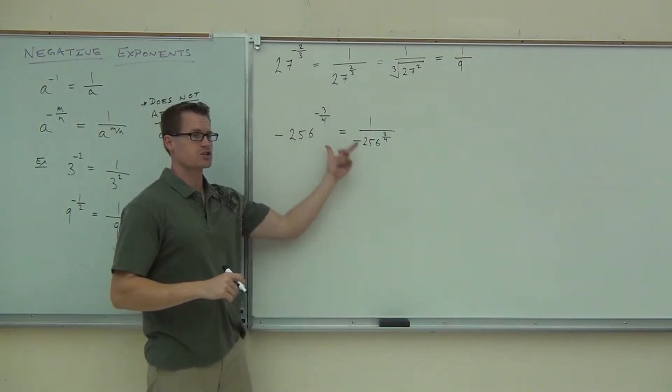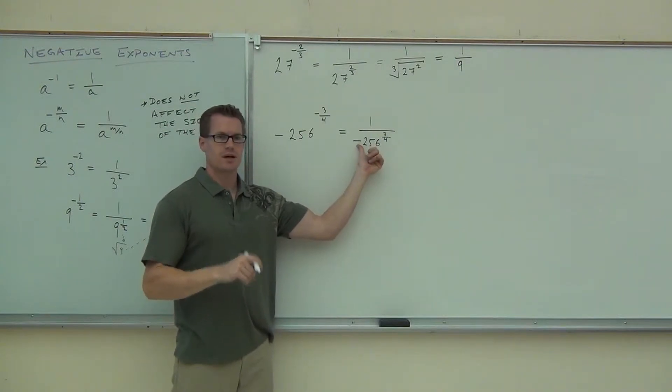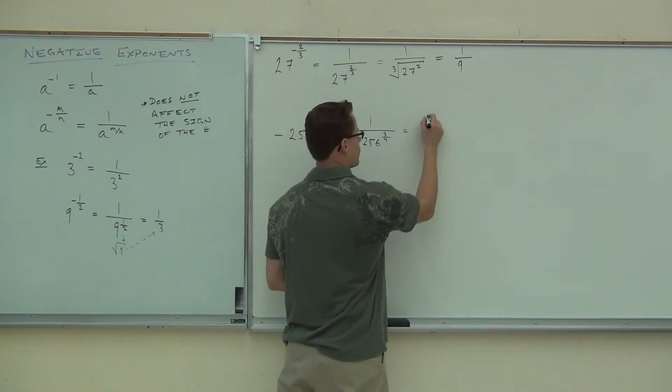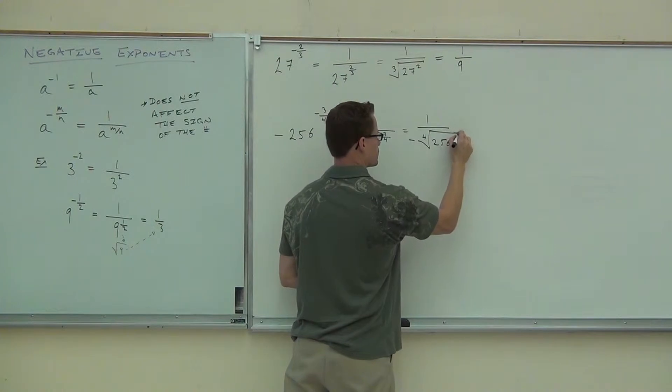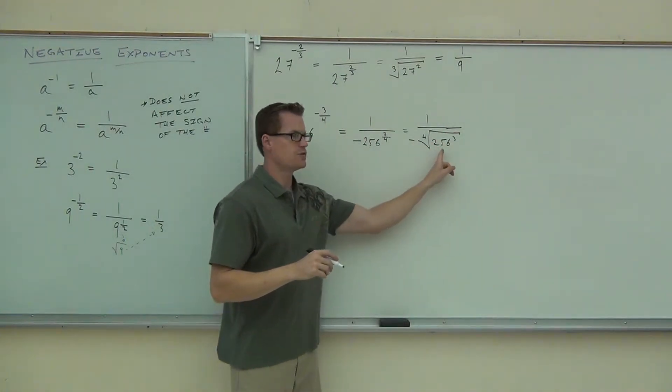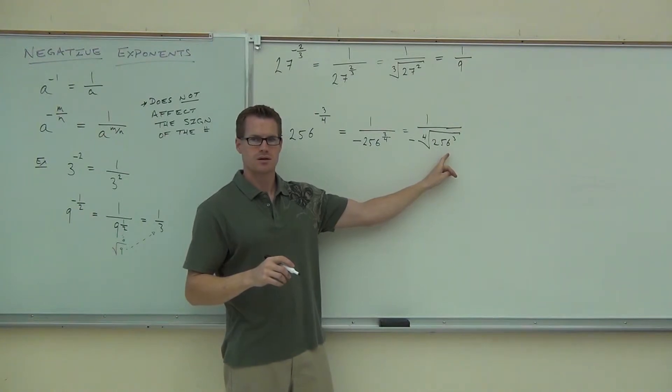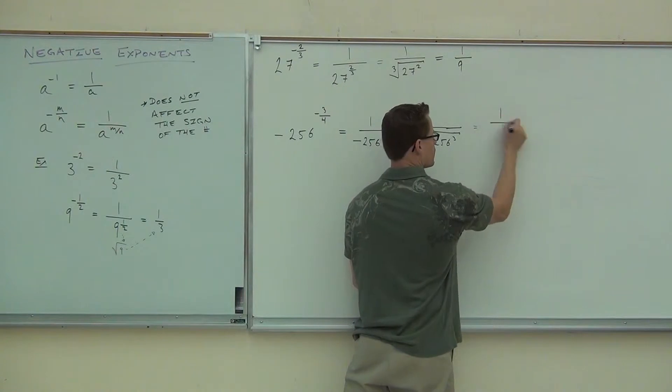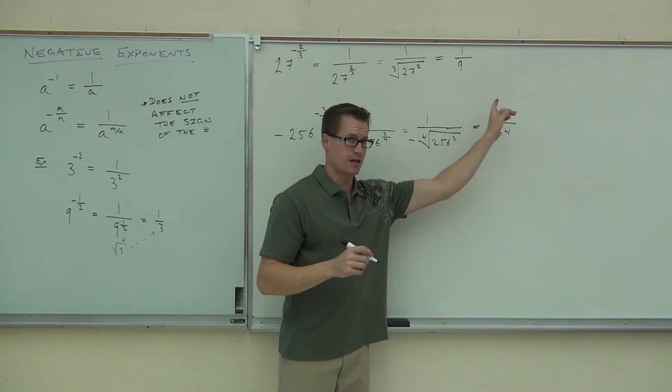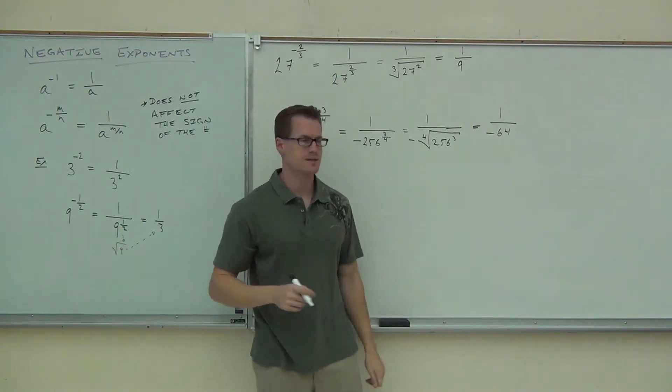Now, we've already done this problem. In fact, it was on the board. I just erased it. Does this negative go inside of the fourth root that we're going to have or outside the fourth root? Outside. So we're going to have 1 over negative fourth root of 256 to the third. We've actually already done this problem. The fourth root of 256, do you remember what it was? Four. And then we take the cube of that, we get 64. So this is 1 over negative 64. Or it doesn't really matter where you put that negative. You could have negative 1 over 64 or negative 1/64. That's the idea.